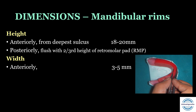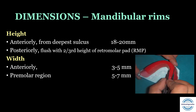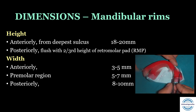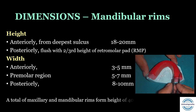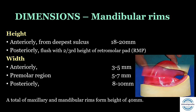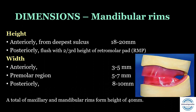The width of mandibular rims: anteriorly 3 to 5 millimeters; in the premolar region 5 to 7 millimeters; posteriorly 8 to 10 millimeters. Combined, the total height of the maxillary and mandibular rims together forms 40 millimeters — this was asked as a multiple choice question in an exam.